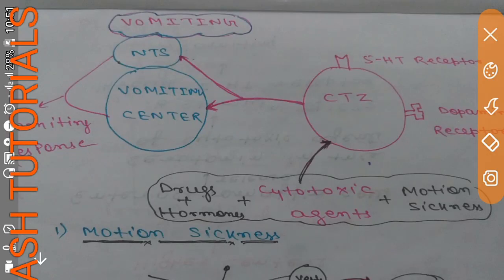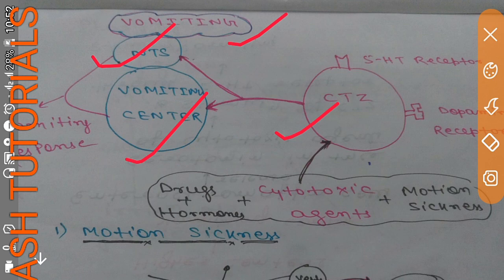Vomiting involves three important portions of the brain. First, the chemoreceptor trigger zone (CTZ). Second, the nucleus tractus solitarius (NTS). Third, the main vomiting center, located in the medulla. Chemoreceptor cells in the medulla initiate vomiting when stimulated by cytotoxic agents or chemical agents, which stimulate the CTZ, which then passes fibers to the vomiting center as well as to the NTS.